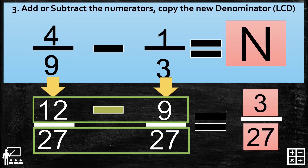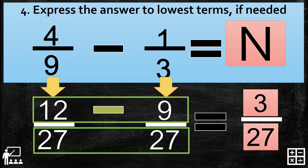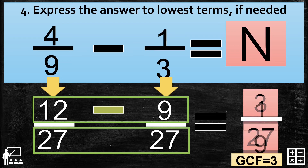Since 3 and 27 have a GCF, we proceed to step 4 to express the answer to lowest term. The GCF of 3 and 27 is 3. So divide 3 by 3 to get 1, and 27 divided by 3 gives you 9. Our final answer is 1 over 9.